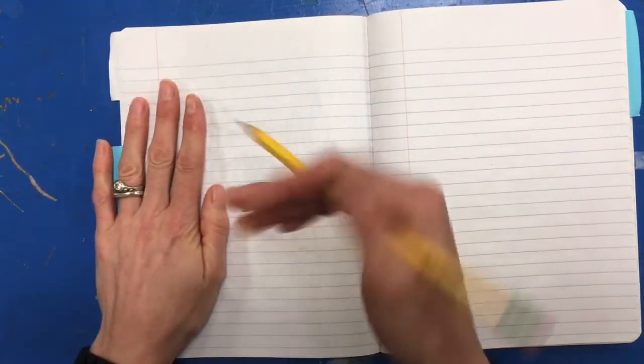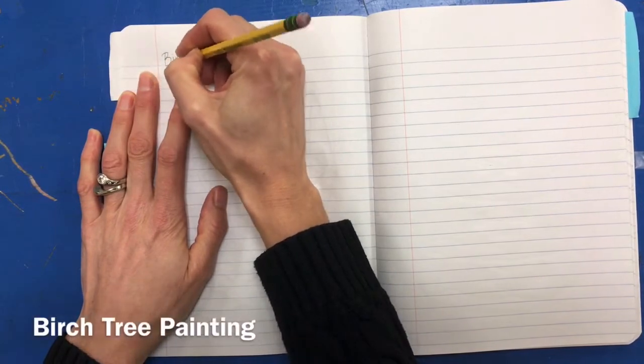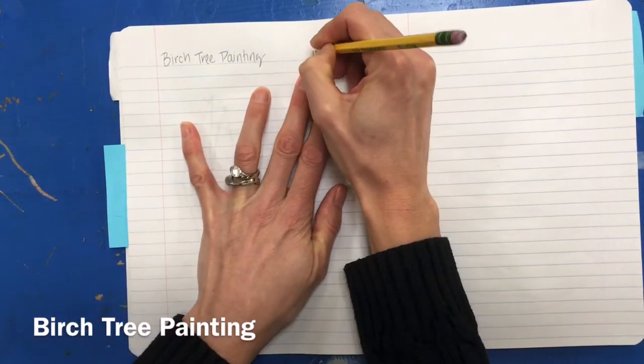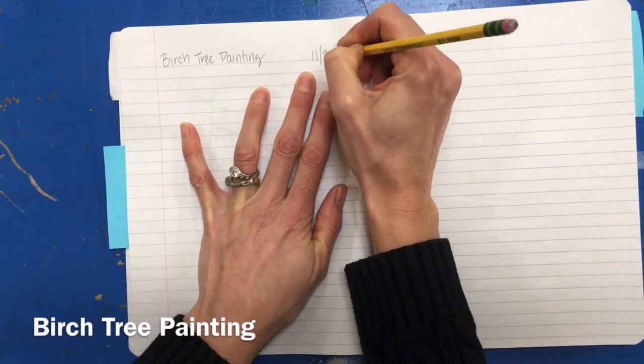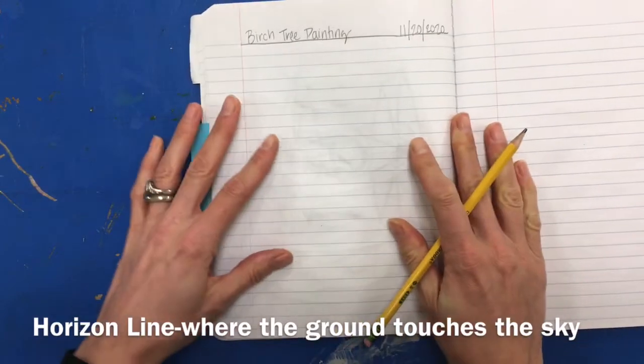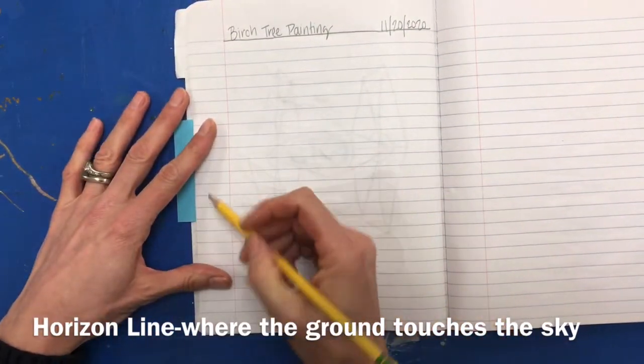Add the date. Our first step to planning is we are going to draw a horizon line, or where the ground touches the sky. So that's a line you can place it down towards the bottom of the paper if you want more sky, or up higher if you would like more ground.